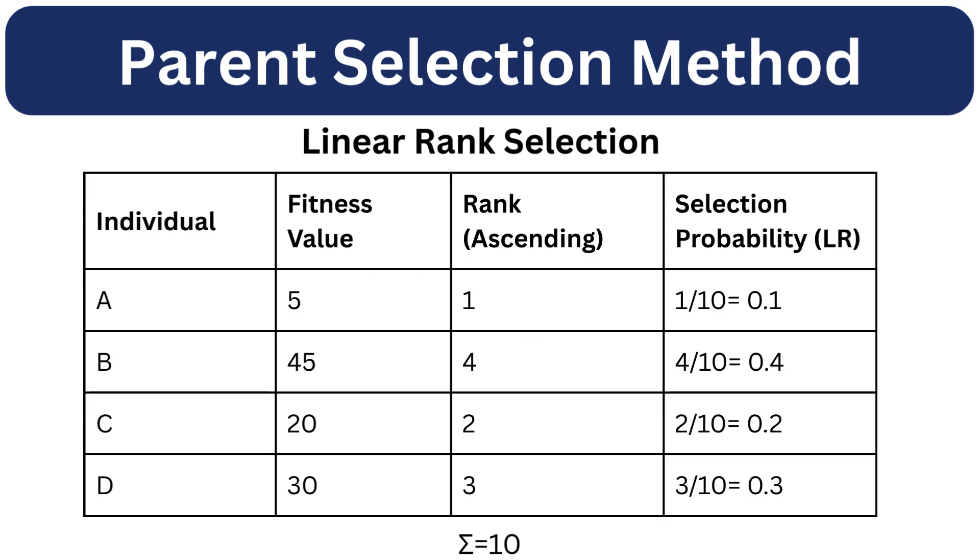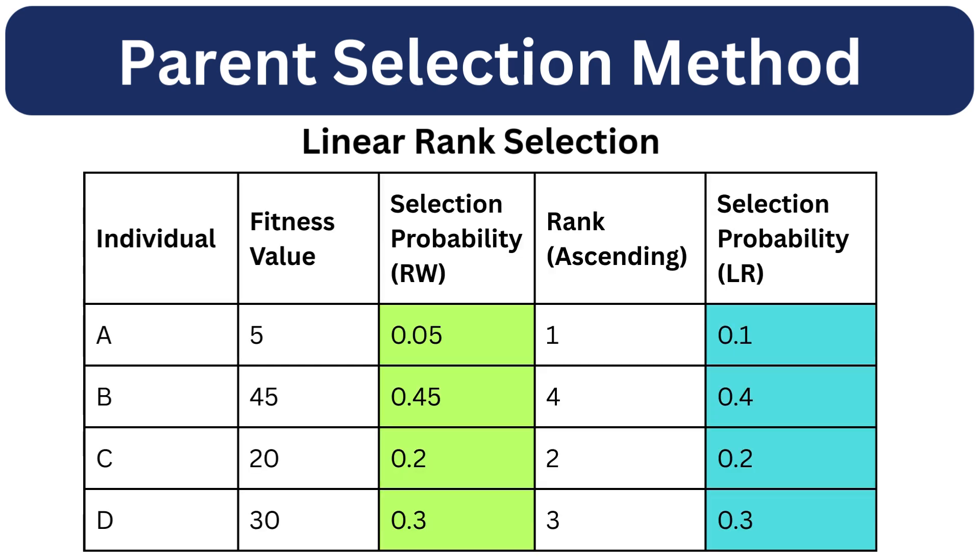Next, we have linear rank selection. Here individuals are ranked and selection probability depends on the rank, not raw fitness. This avoids the problem where one super fit individual dominates the whole population. First step is to assign ranks to the individuals based on their fitness value from lower to higher. So the individual with the fitness value that is lower gets rank 1 and subsequently the remaining ones. So the individual with the highest fitness value that is 45 gets rank 4. Based on the rank, the selection probability is calculated. This table gives a comparison of roulette wheel selection and linear rank selection methods. As you can see, ranking smooths out extreme fitness differences and maintains the selection pressure.